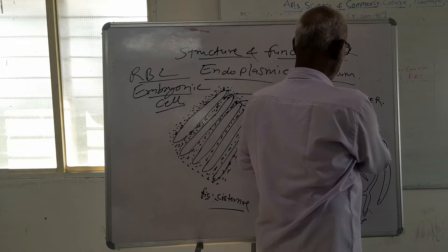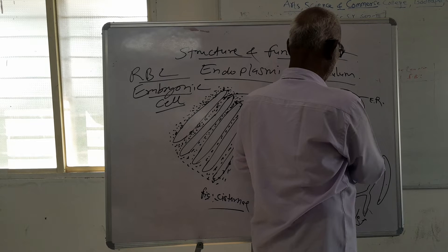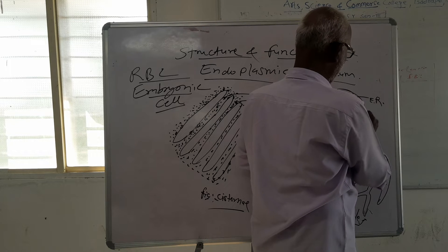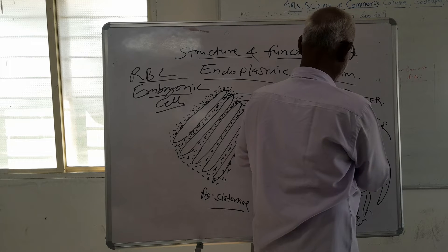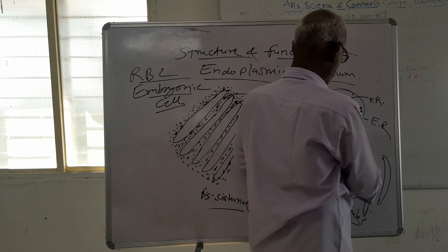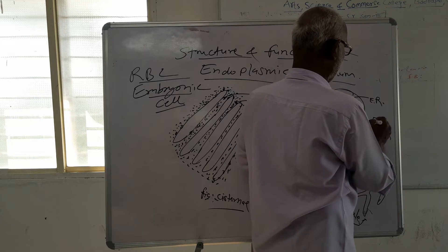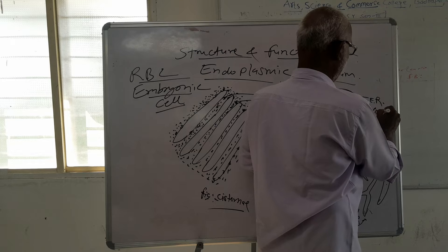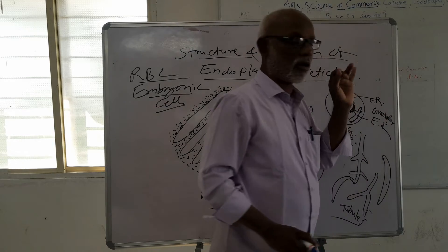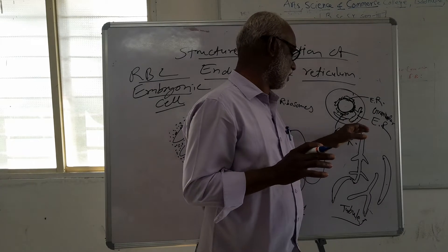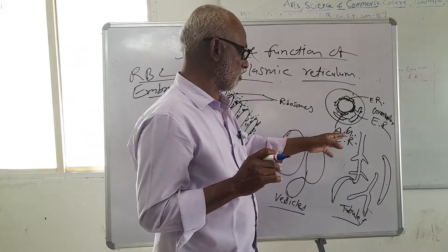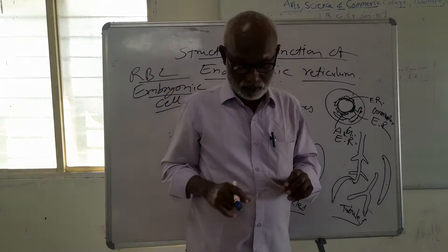Some are granular and some are agranular. This type of endoplasmic reticulum — agranular — is the smooth endoplasmic reticulum. Granular, or rough, means ribosomes are attached on these tubules and cisternae. Agranular means smooth endoplasmic reticulum.